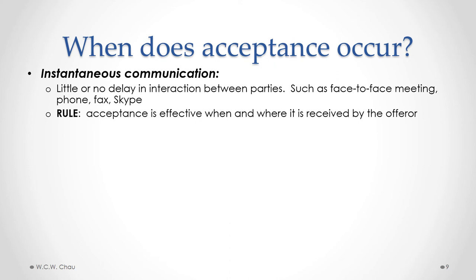The first type is called instantaneous communication — that's where there is little or no delay in the interaction between two parties. The most obvious type is a live face-to-face meeting with two people physically together in the same room. Another type of instantaneous communication is by telephone. Fax is also considered to be instantaneous, and a more modern type could be Skype or FaceTime. The legal rule is that acceptance is effective when and where it is received by the offeror — so when the offeror actually hears the acceptance face-to-face, over the phone, by fax, or over Skype.